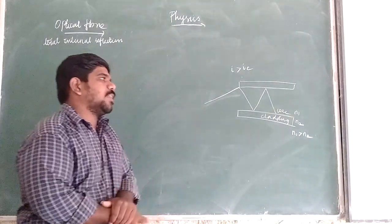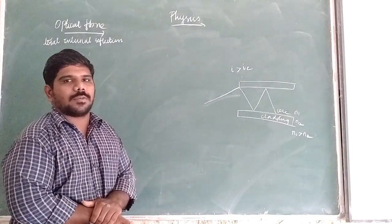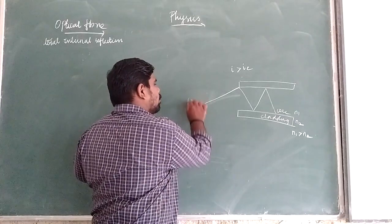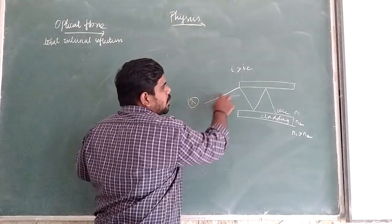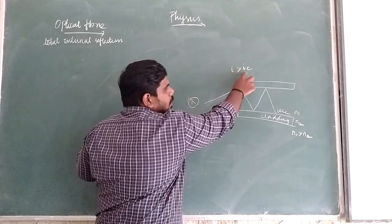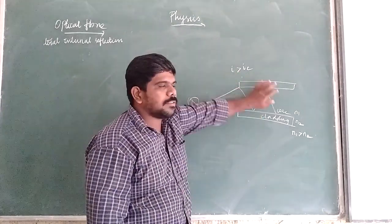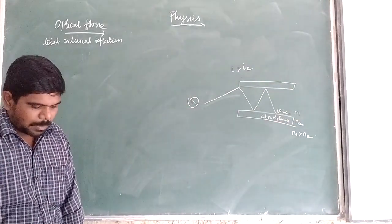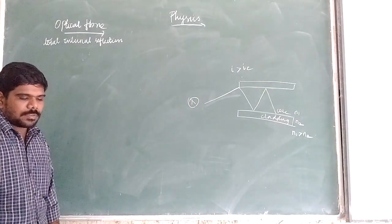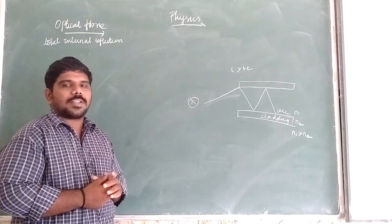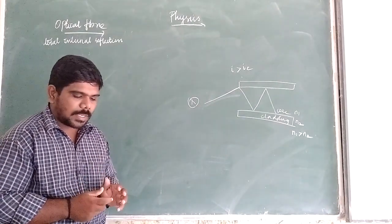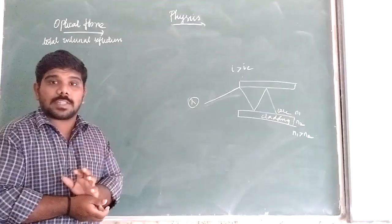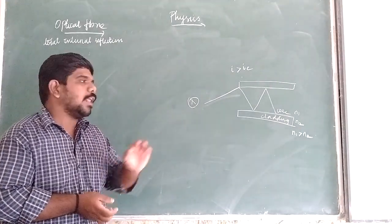So the light is transmitted through the fiber without any appreciable losses. While bending the optical fiber, we must ensure that the total internal reflection is maintained at every point of incidence.